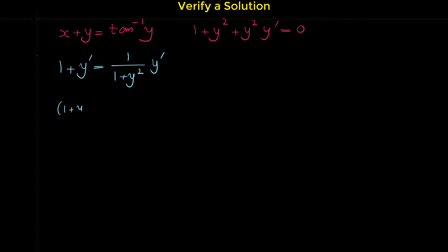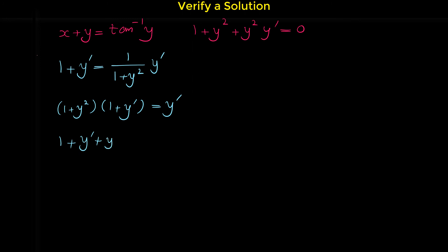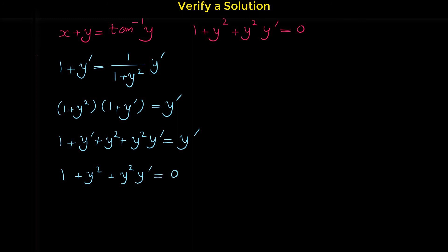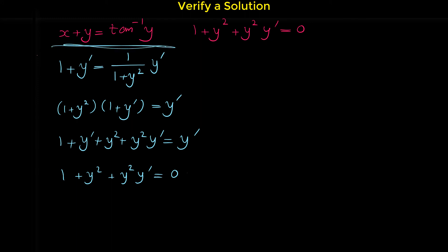The derivative of x is 1, derivative of y is y prime, and the derivative of arctangent y is 1 over (1 plus y squared) times y prime. Multiplying both sides by (1 plus y squared) gives: 1 plus y squared times (1 plus y prime) equals y prime. Expanding: 1 plus y prime plus y squared plus y squared y prime equals y prime. Canceling y prime from both sides gives 1 plus y squared plus y squared y prime equals 0, which matches the given differential equation exactly, confirming this is a solution.